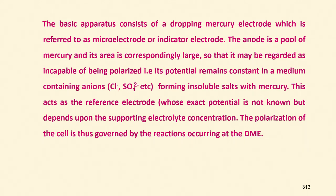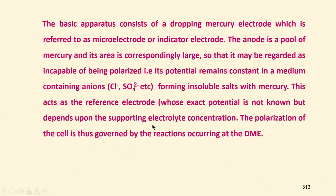The anions — such as chloride and sulphate — form insoluble salts with mercury. So this mercury pool acts as a reference electrode; their exact potential is not known, but it depends on the supporting electrolyte concentration. The polarization of the cell is thus governed by the reactions occurring only at the dropping mercury electrode (DME), because at the anode nothing basically happens.